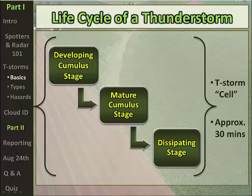The entire life cycle of a thunderstorm can occur in approximately 30 minutes, although this will vary from case to case. The life cycle can be broken down into three main stages: the developing cumulus stage, the mature cumulus stage, and the dissipating stage.